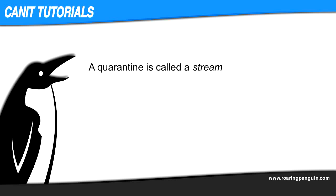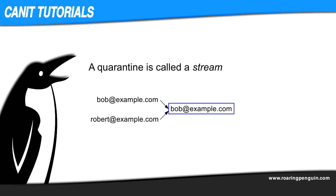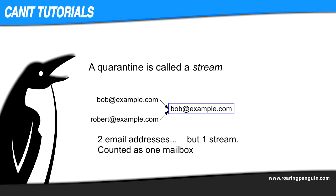In our system, each quarantine is called a stream. For example, bob.example.com and robert.example.com might both go into the bob.example.com stream. If you set this up for all of your aliases, then we can count streams instead of email addresses, which makes for a more accurate reflection of the number of mailboxes.